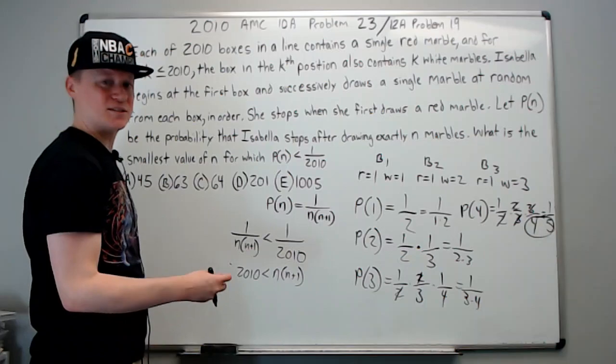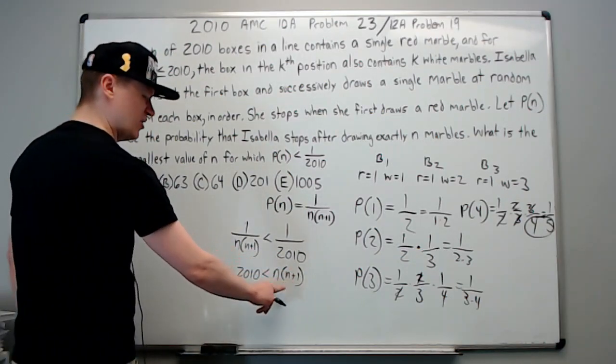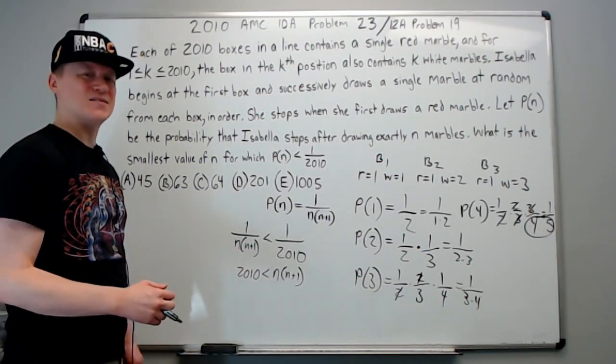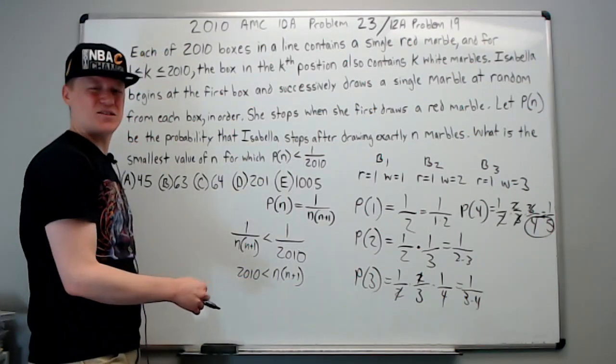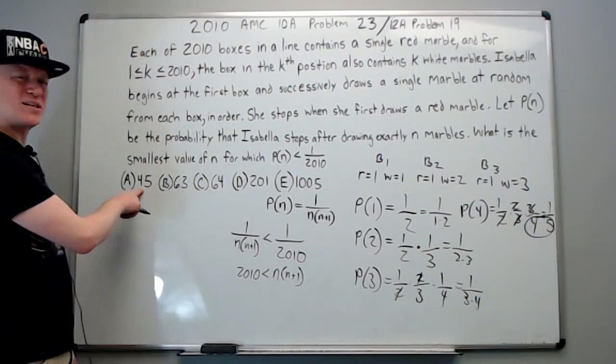Okay, so then notice that n times n plus one is going to be a little bit more than n squared. So we're kind of just looking for a perfect square that's larger than 2010 as a starting point. If we glance at the answers, we see the smallest possible value of n in the answers is 45.